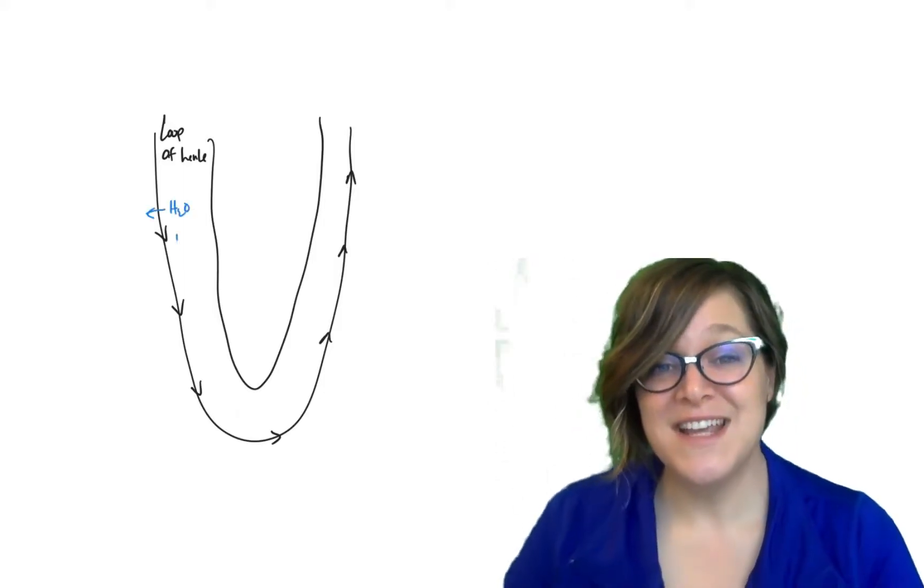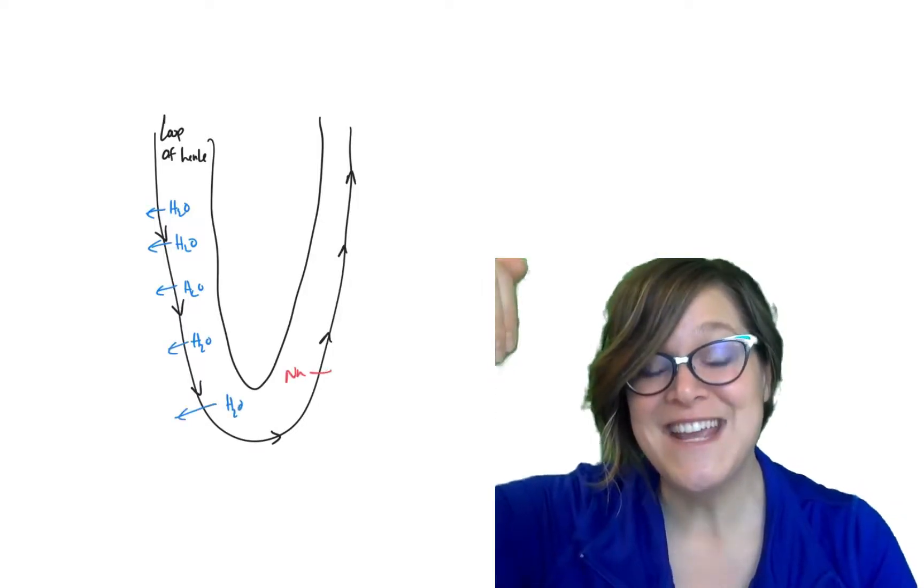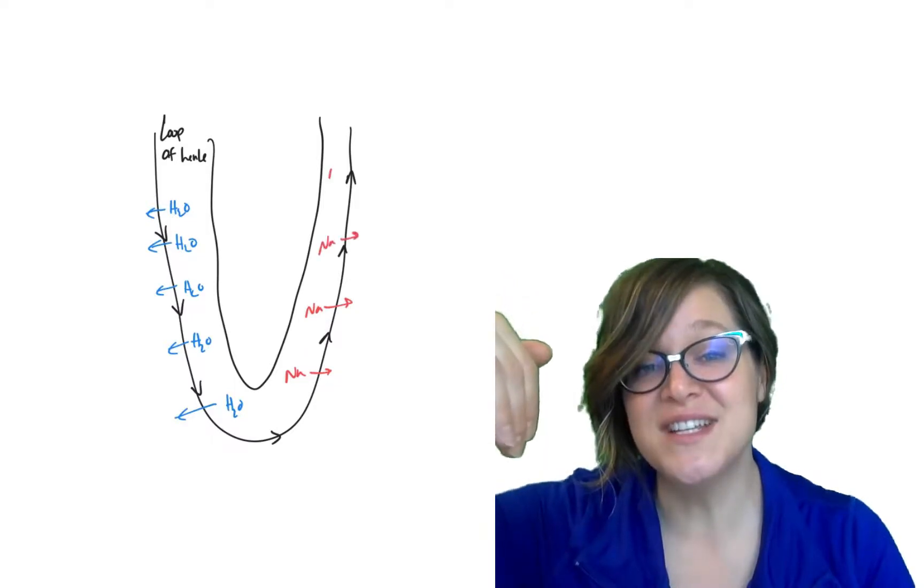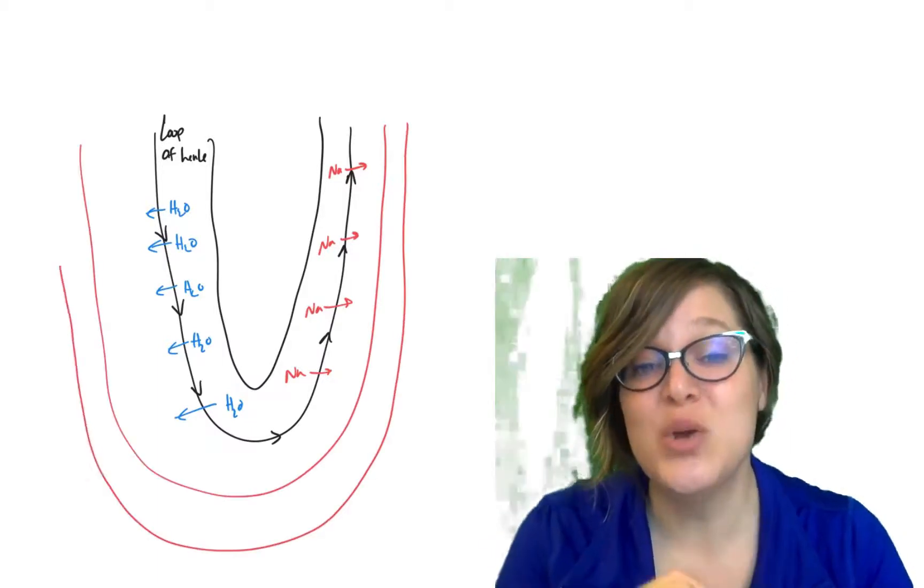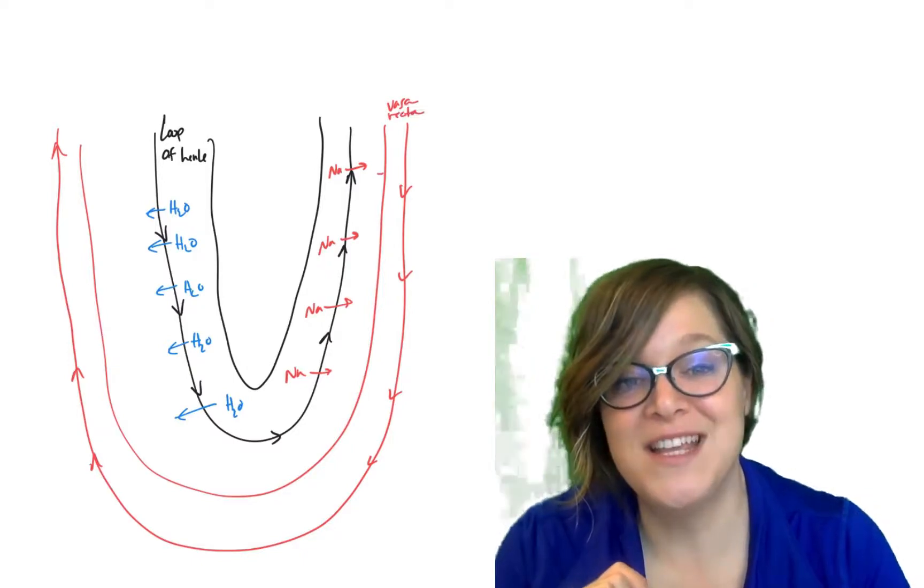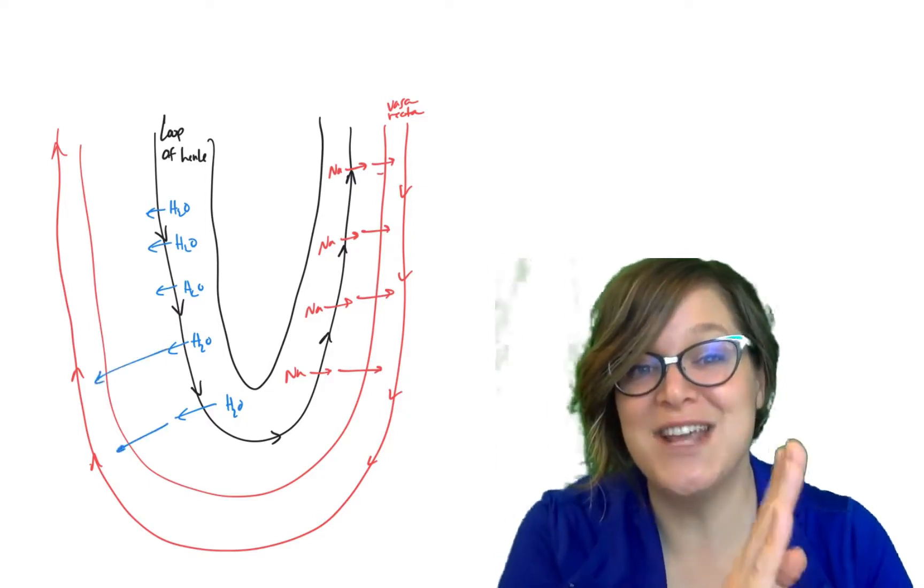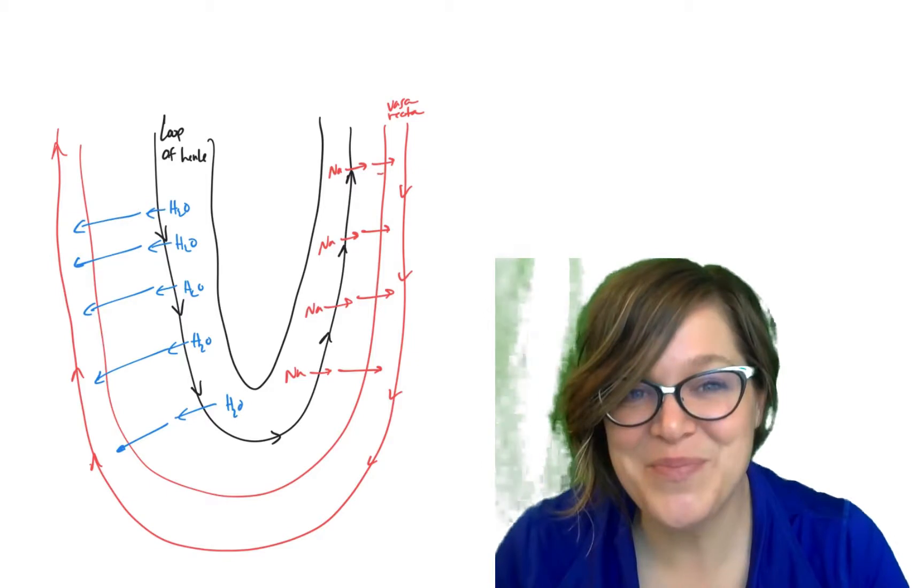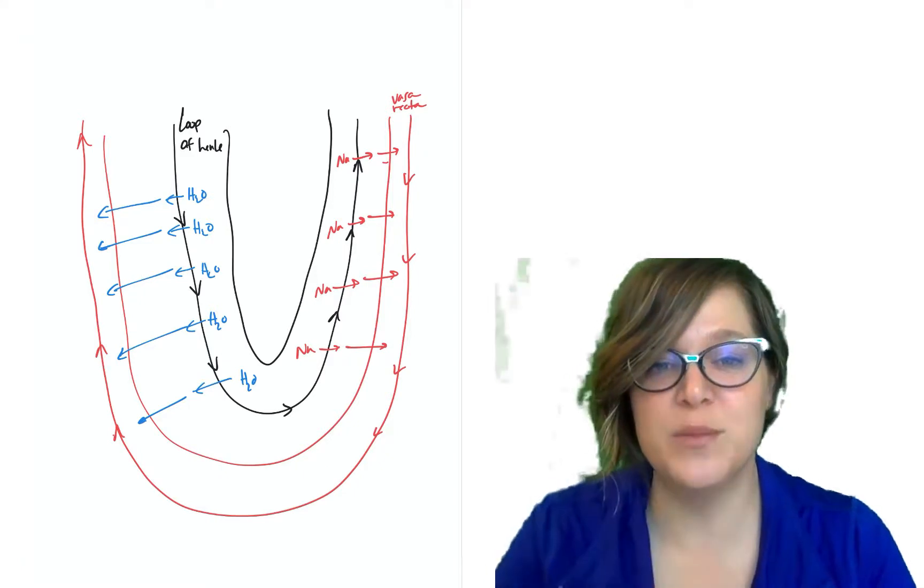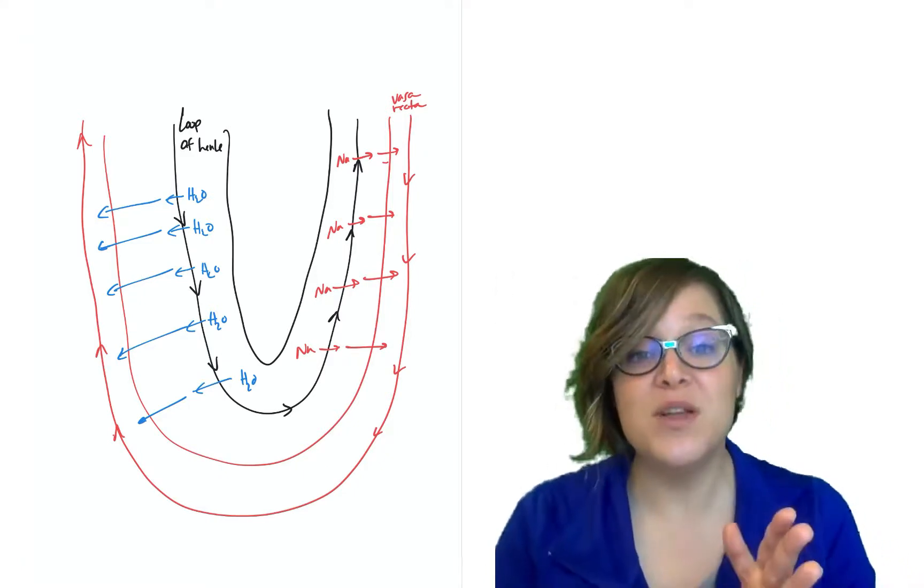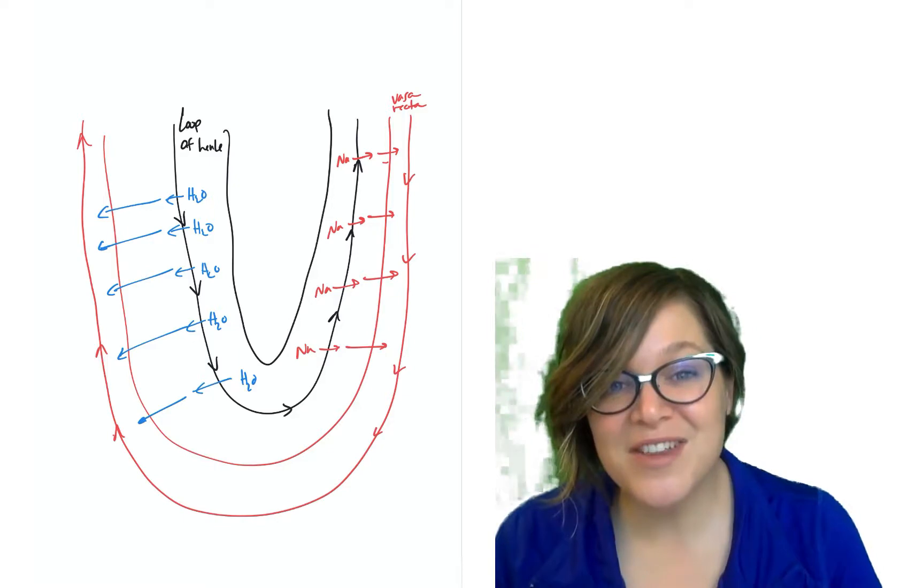The vasa recta goes in the opposite direction of the loop of Henle. What that means is that as the vasa recta is descending, it's descending where the ascending loop of Henle is, it's going to pick up all that salt that the loop of Henle is letting off because it's going into a saltier environment and it wants to equilibrate. As it ascends, which it does on the side of the descending loop of Henle, it's going to start to pick up water because now it's moving into less and less salty environments and it's going to want to equilibrate there. What this does is I think of it like a vacuum that cleans up all the stuff that comes off the loop of Henle. It turns out that because of the way the blood flows, it actually magnifies the ability of the loop of Henle to concentrate, but we're not going to cover that in this video.